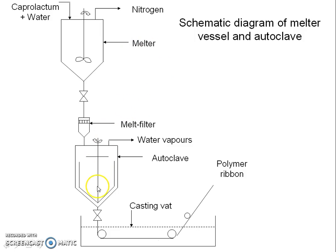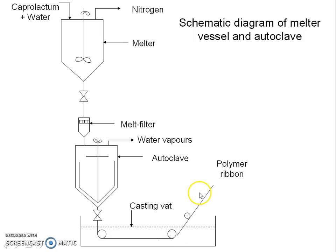After completion of polymerization, the clear viscous melt is pressed by means of nitrogen pressure to the metering pumps and then to the spinnerets. The material goes to a casting bath that is filled with water. The polymer is solidified into ribbon form and is drawn away by rollers to be fed into a chip cutting machine. These chips are then dried to the desired moisture content and used for spinning nylon filaments.